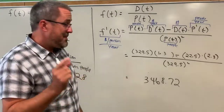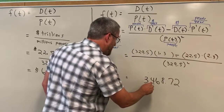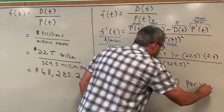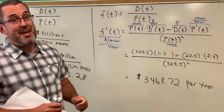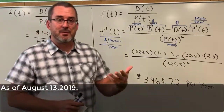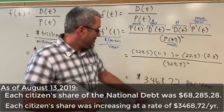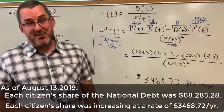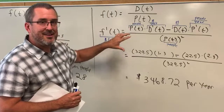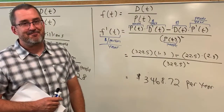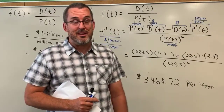So in August 2019, the amount of money each man, woman, and child needs to contribute to pay off the national debt is increasing at a rate of $3,468.72 per year. So we found two things: the original function tells us that hypothetically each man, woman, and child would be accountable for about $68,000 to pay off the national debt, and that amount is actually increasing by almost $3,500 per year as of August 2019. I hope that helps you see how the quotient rule can be applied to analyze real-world situations and make sense of these really big and sobering numbers.